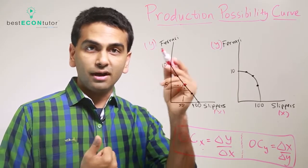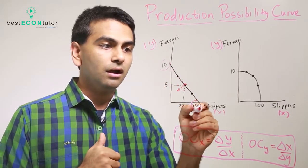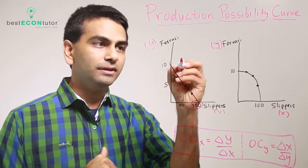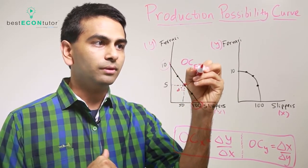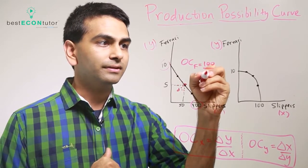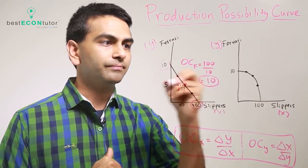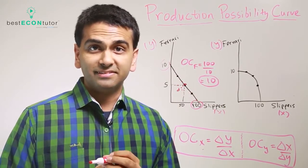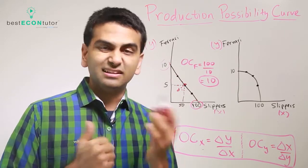The cost of making 10 Ferraris would simply be 100 slippers. The opportunity cost of a Ferrari would be 100 slippers over 10 Ferraris, which simply equals 10. 100 over 10 simplifies to 10, so the cost of a Ferrari is 10 slippers.